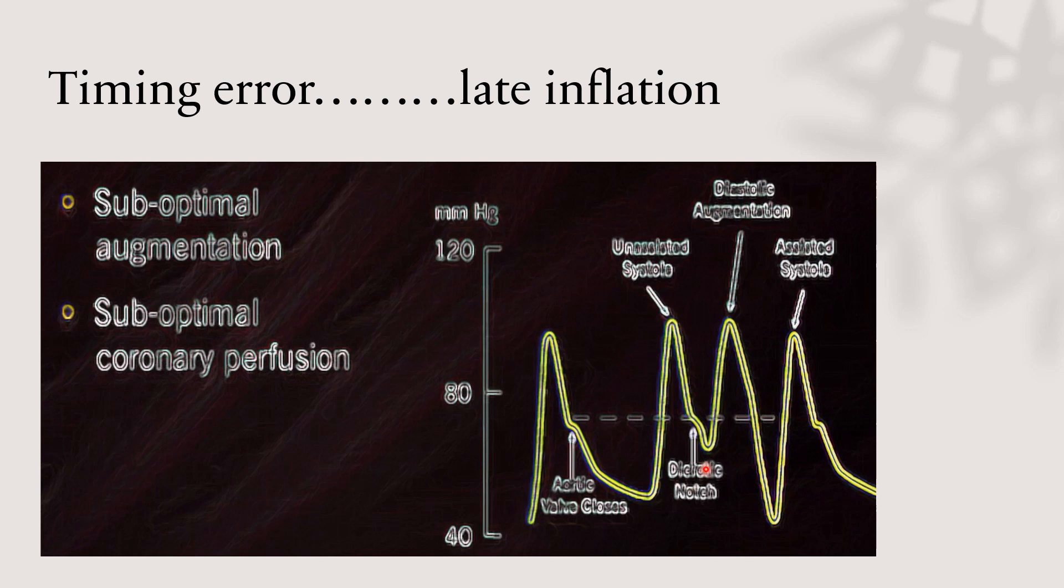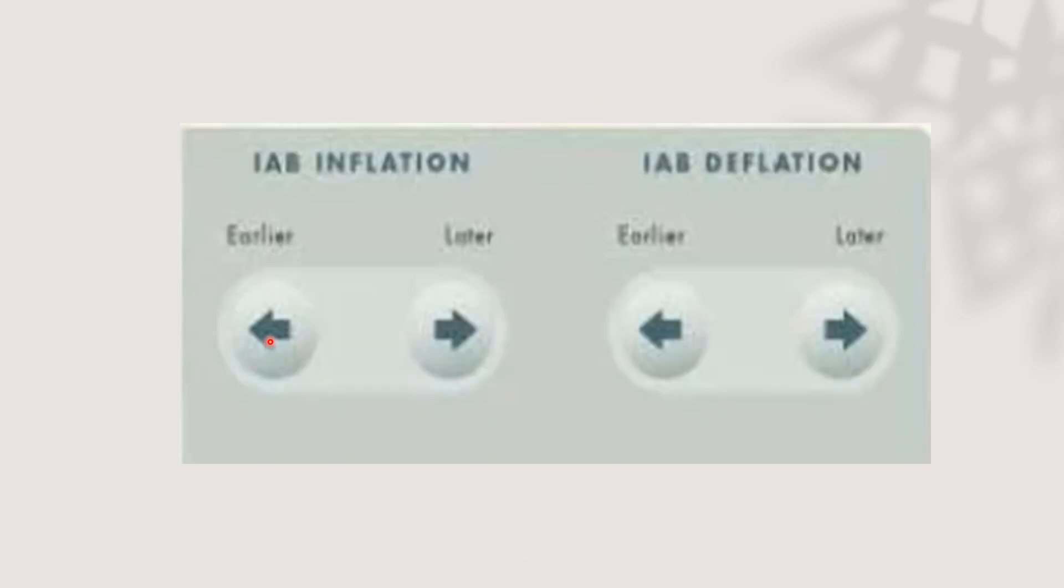The second part is late inflation, and that will lead to suboptimal augmentation. If there's a delay in the inflation of the balloon, it will delay the displacement of blood into the periphery and coronary artery, leading to suboptimal coronary perfusion. We solve the issue by making the balloon inflate earlier till we get the right curve.